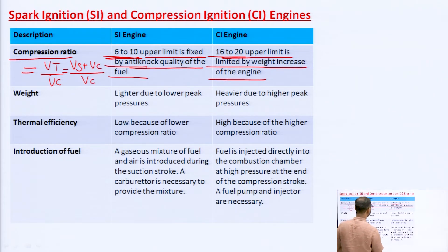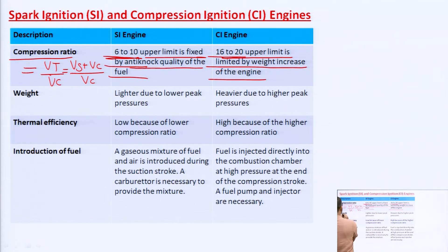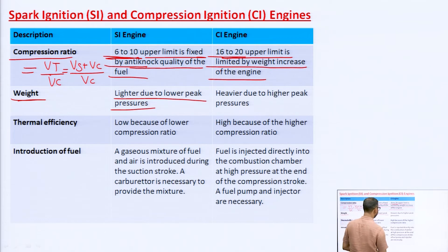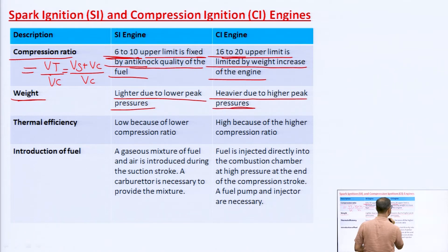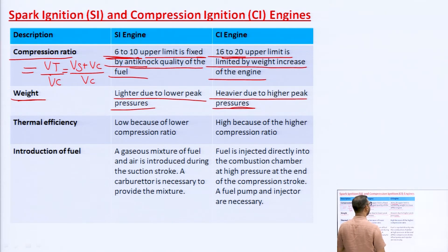In the case of the SI engine, the compression ratio is 6 to 10, and in the case of the CI engine it is 16 to 20. Regarding weight: SI engines are lighter due to lower peak pressure. In the case of the CI engine, the engine is heavier due to high peak pressure — we have to compress the air much more, and to achieve higher peak pressure, these engines are heavier compared to SI engines.